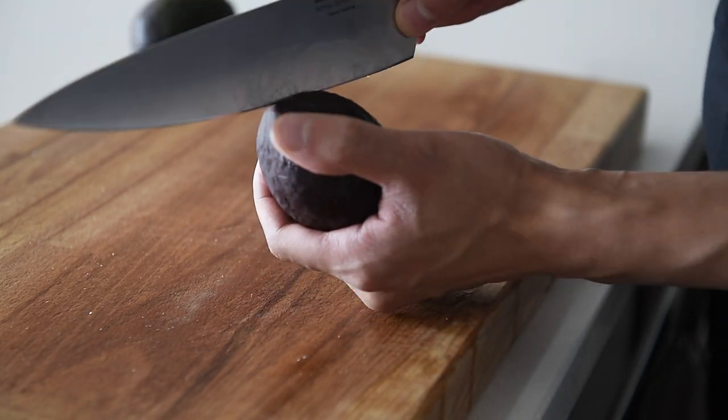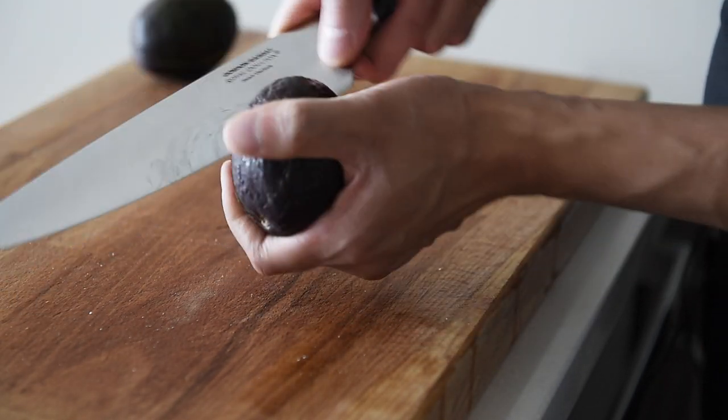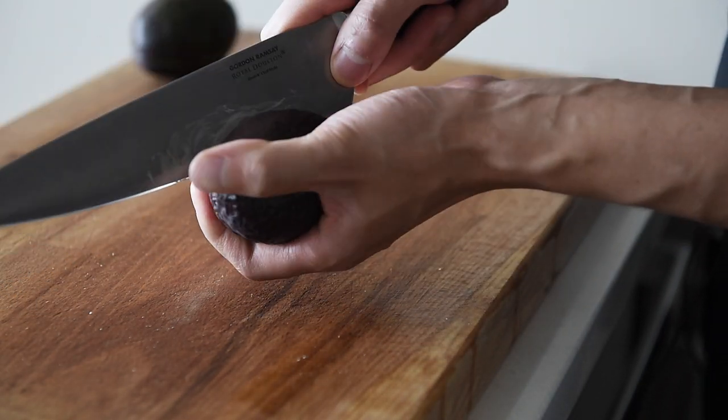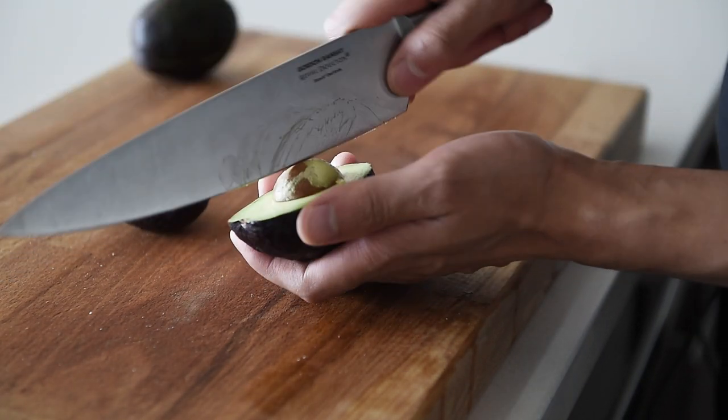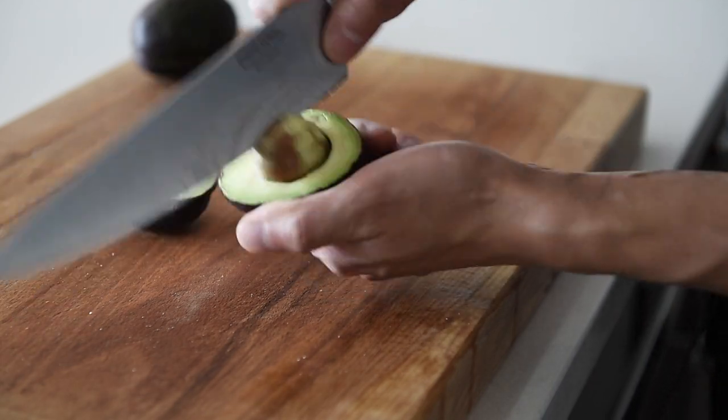This is definitely an all-time favorite and it's so easy to make. First off, prep your avocado. Just take your avocado, run your knife through the middle. To remove the pit, just twist.